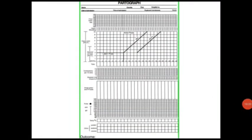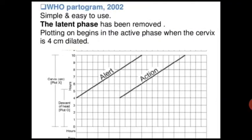This is a sample of the partogram — the WHO partogram 2002. It is simple and easy to use. The latent phase has been removed, and plotting begins in the active phase when the cervix is four centimeters dilated. Thank you.